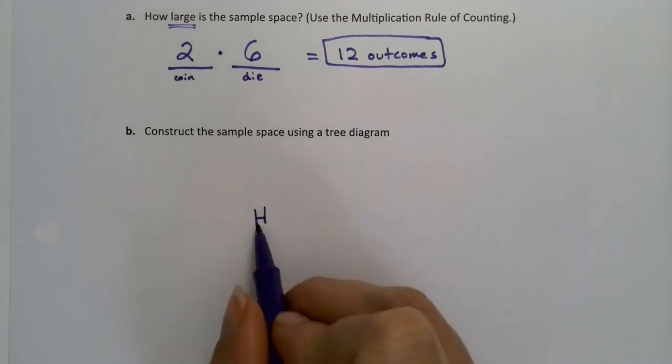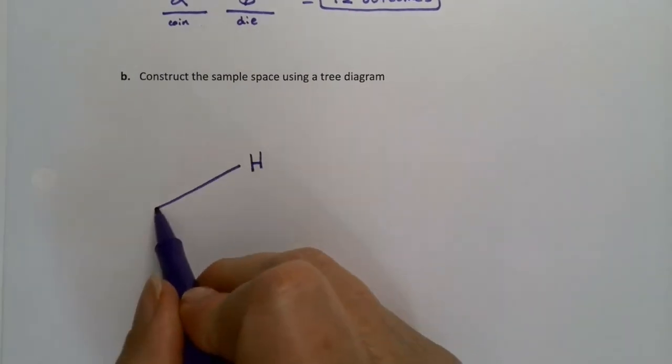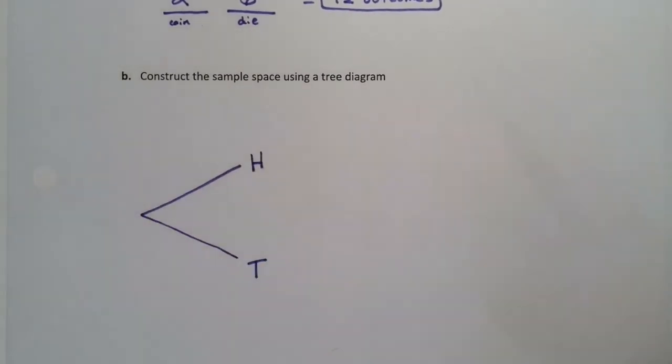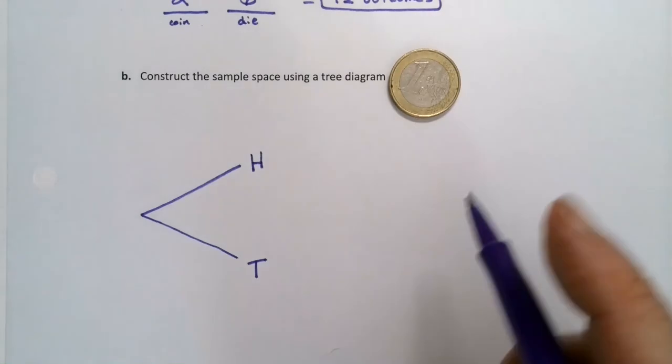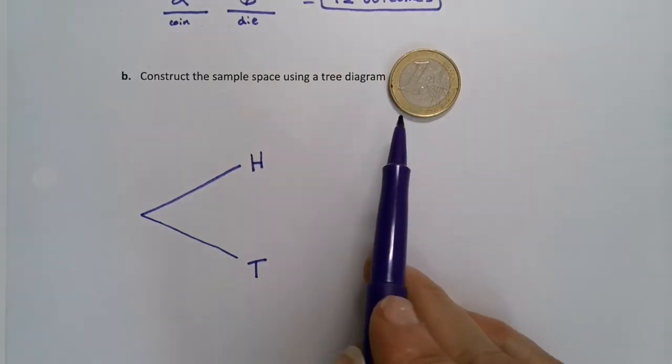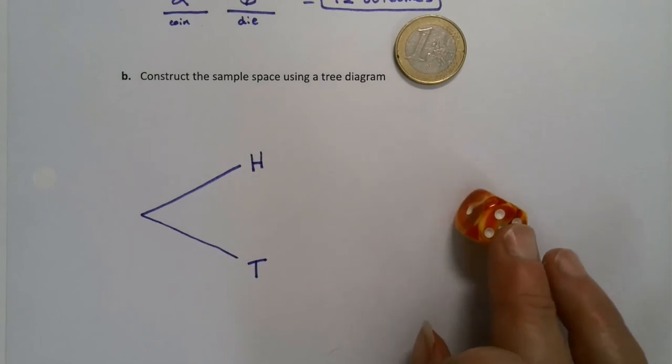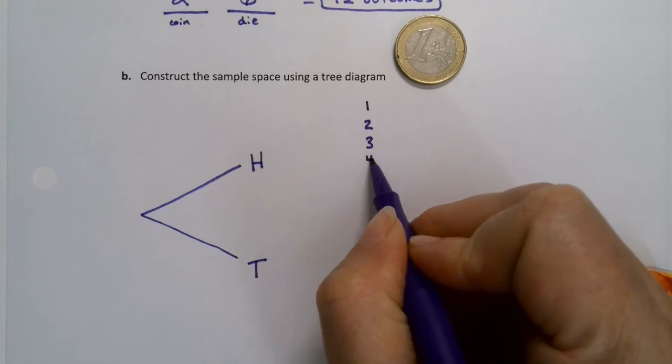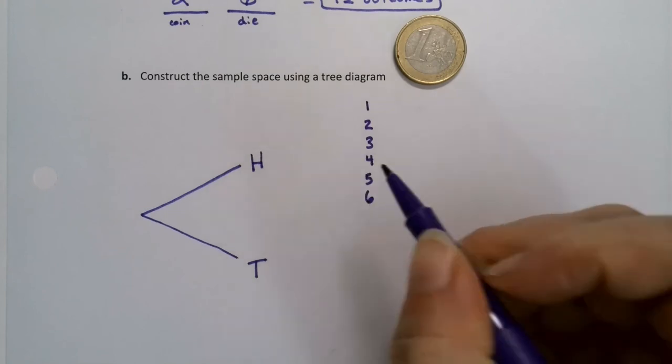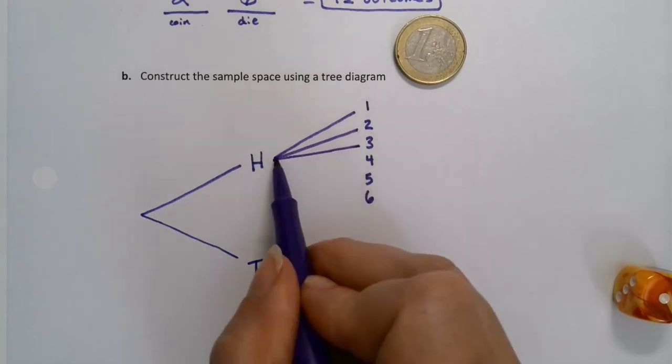When you toss the coin, you have heads and tails. Those are the two options. So then you go back and make your little V right there. Now, after I get heads—oops, that's a tails—there it is, heads. This is a euro coin. So after I get the heads, then I have to toss the die, and there are six options for that die. So I'm going to have to write one, two, three, four, five, six.